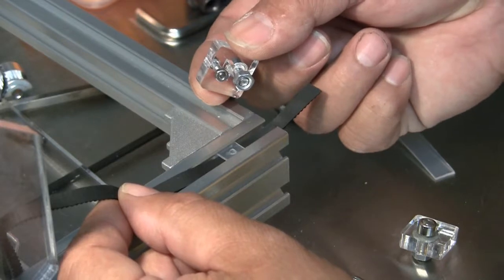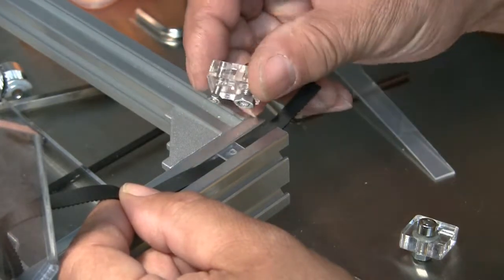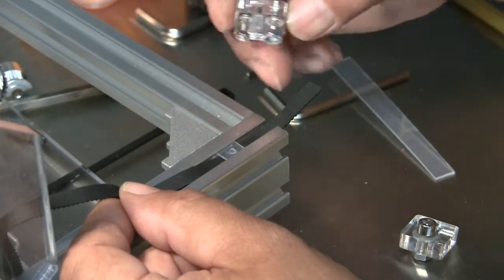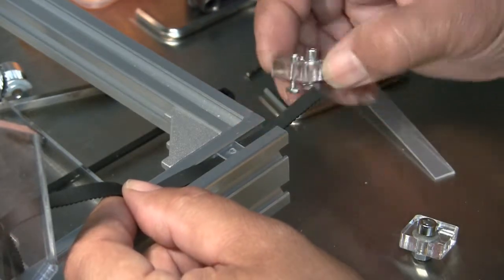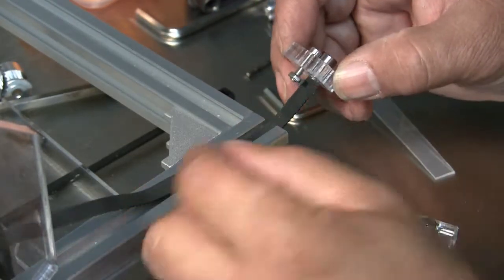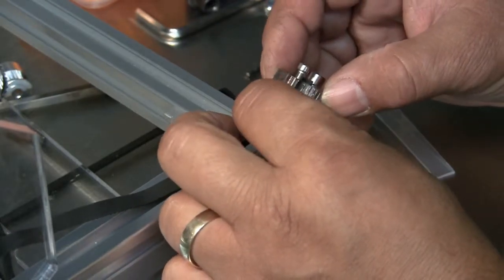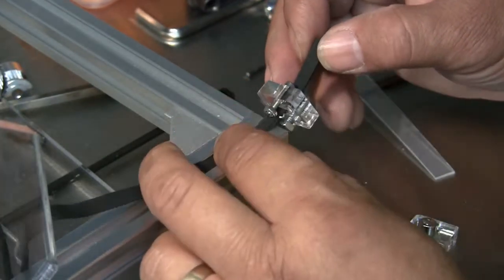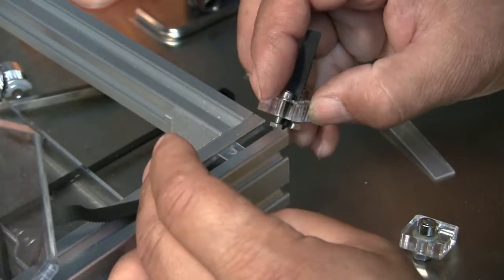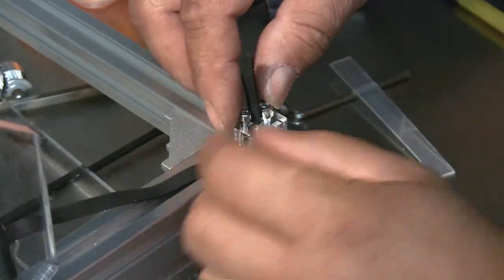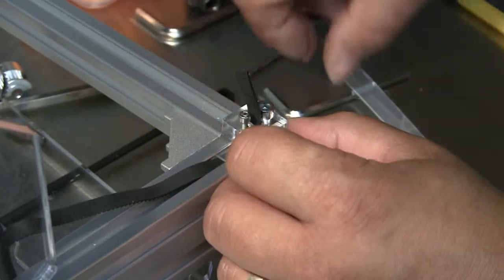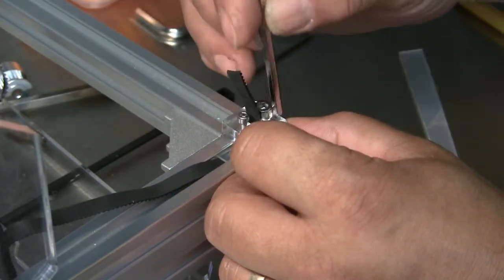Before I slip it into place, I put the belt through here. I slip it in and tighten flush with the back. I tighten the back piece and just snug it.